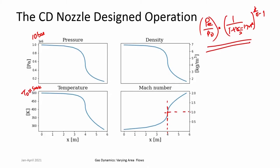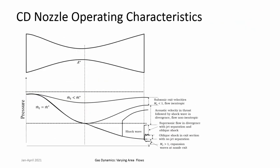But there are many ranges of operations between all these states — sometimes pressures can increase also. This leads to discussion of the operating characteristics of a CD nozzle. This is a schematic representation of how pressure varies, and as a consequence how mass flow rate and Mach number vary. In this case we consider fixed P₀ and reduce P_ambient or back pressure.